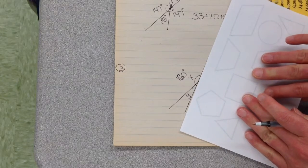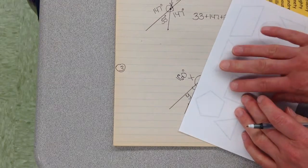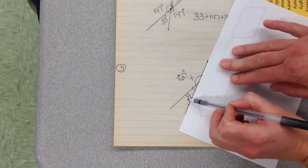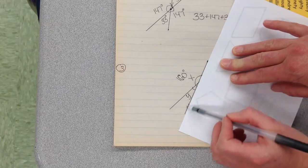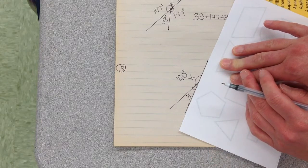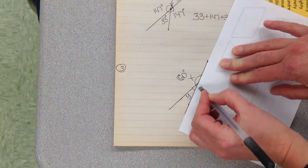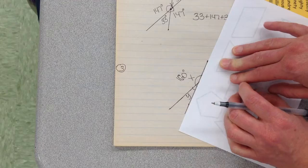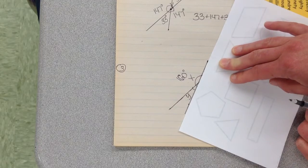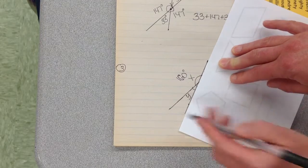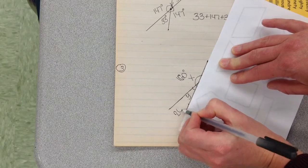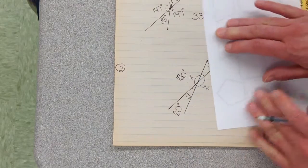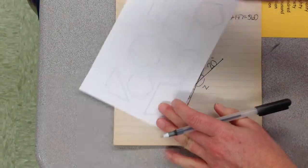I can now go around and say to myself, these two form a straight line. This angle right here and this angle right here form a straight line. I know a straight line has 180. 180 minus 160 is 20 degrees.